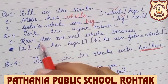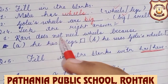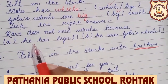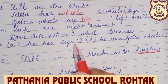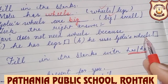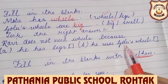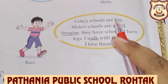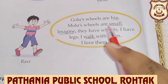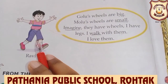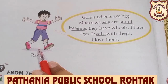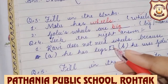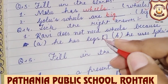Now take the right answer. Ravi does not need wheels. Ravi ko wheels ki need nahi hai. Why? Because he has legs. He has legs — us ke paas legs hain. Aur woh Golu ke wheels use kar lega. Ravi ke paas legs hain toh us ko wheels ki need nahi. So the right answer is: he has legs.